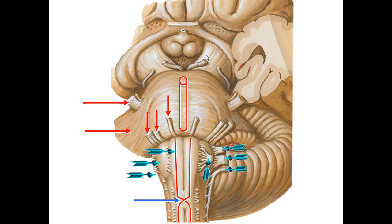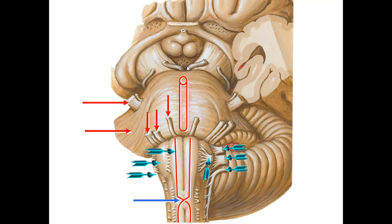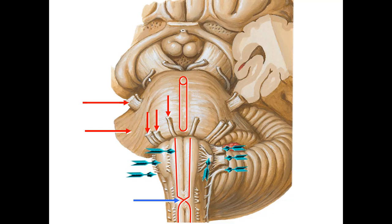The sensory root of the facial nerve is called the nervus intermedius because it is located between the motor root and the vestibulocochlear nerve. This is the midbrain — the anterior aspect — and this is the cerebral peduncle or crus cerebri. The oculomotor nerve exits from the interpeduncular fossa, medial to the crus cerebri, and the trochlear nerve comes from the back of the midbrain.